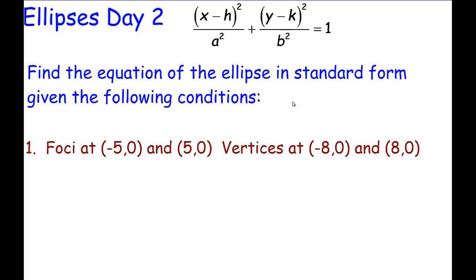Hi everybody, welcome to ellipses day two. Now we've already seen how to convert and do completing the square with ellipses and graph ellipses. So now today we're actually going to go backwards. We're going to start with conditions on the graph and then write the equation of the ellipse from that statement.